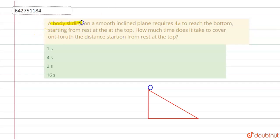A body sliding on a smooth inclined plane requires four seconds to reach the bottom starting from rest at the top. How much time does it take to cover one-fourth the distance starting from rest at the top?